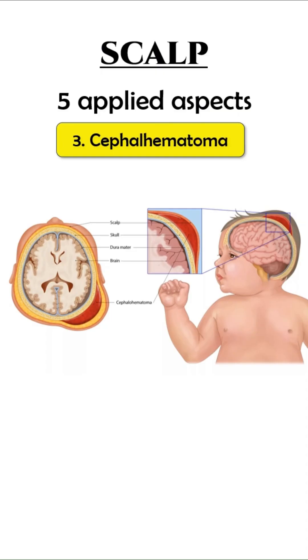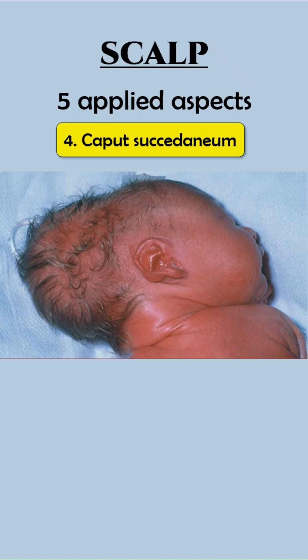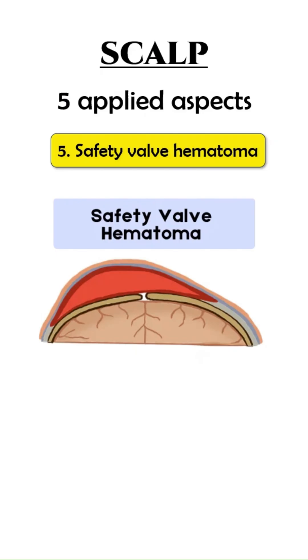Cephalohematoma is a subperiosteal hemorrhage due to rupture of blood vessels during birth trauma. Caput succedaneum is a subcutaneous edema of the presenting part of the head at delivery. Safety valve hematoma is a subdural hematoma that communicates with the subarachnoid space through a tear in the arachnoid mater.